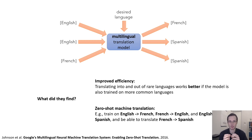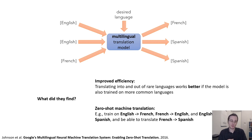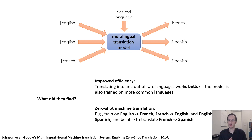Another finding, which was a little more surprising, is that you can actually accomplish zero-shot machine translation — meaning you have a pair of languages for which you've never seen paired data. For example, if you trained on English to French, French to English, and English to Spanish, you could then translate French to Spanish even though you've never seen examples going from one to the other. This is exactly the idea that internally the model has a language-agnostic representation, so it doesn't need to see all pairs of languages.